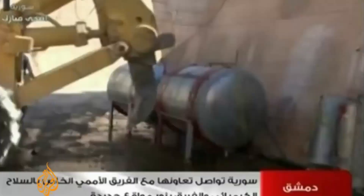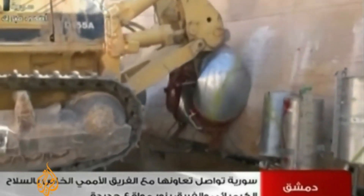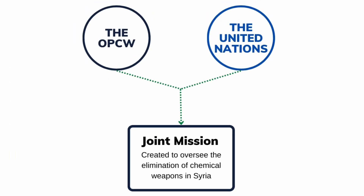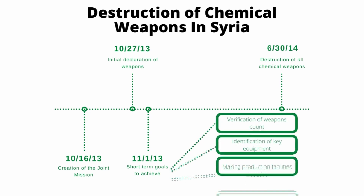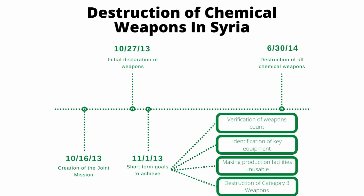After Syria's addition to the OPCW, a number of programs were created to investigate the chemical attacks and eliminate Syria's chemical weapons stockpile. The first was the OPCW and United Nations Joint Mission, created on October 16th, 2013, to oversee the elimination of chemical weapons in Syria. It established multiple timelines: Syria's initial declaration of weapons should be submitted by October 27th, and all chemical weapons destroyed by June 30th, 2014.